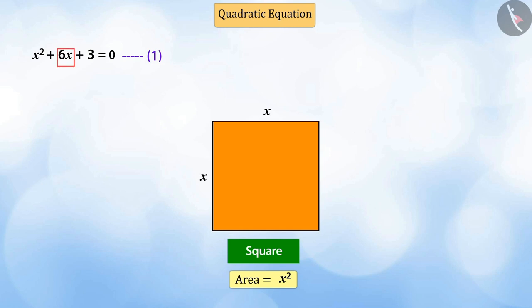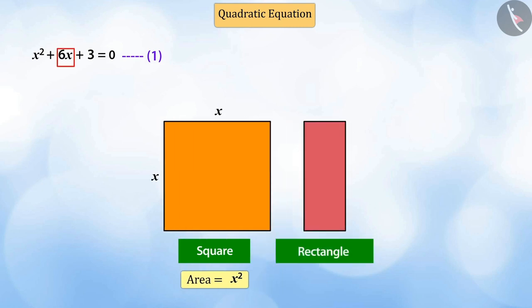Similarly, looking at the second term of the equation. Suppose it is a rectangle, which has one side 6 and other side x, whose area is 6x.